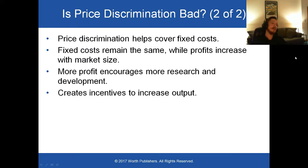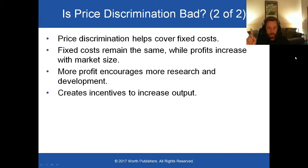Going back to our Accomavir example, we see that when GlaxoSmithKline can sell at two separate prices in two separate markets, more people in the world as a whole are getting the drug because of the price discrimination.